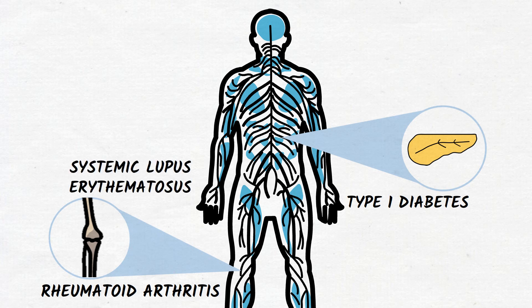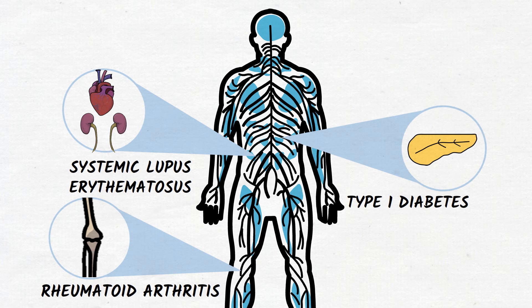Systemic lupus erythematosus, in which autoantibodies can attack tissues throughout the body, affecting organs like joints, kidneys, brain, and heart.